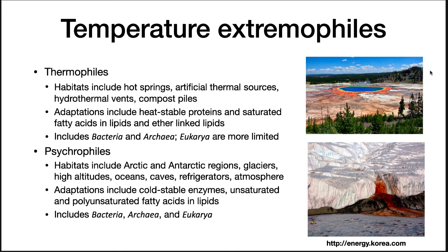Thermophiles have habitats including hot springs, artificial thermal sources, hydrothermal vents, compost piles, etc. Adaptations include making heat-stable proteins and using saturated fatty acids and lipids and ether-linked lipids. There are high-temperature thermophiles in the bacteria and archaea. Eukaryotes are more limited because they cannot change all their parts easily to live in high-temperature environments.